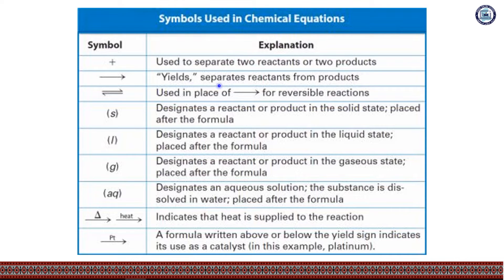When you read the yields sign, it means 'yields' or 'produces.' The reactants and products are chemically different. If the reaction is reversible, a double arrow is used. In brackets, the letter S placed after a formula designates a reactant or product in the solid state.